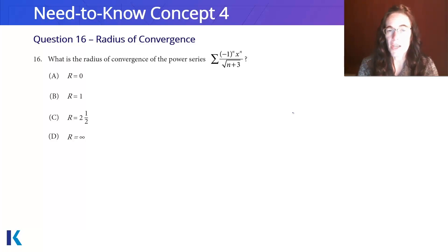What is the radius of convergence of the power series, the sum, negative 1 to the n, x to the n, over the square root of n plus 3? It's telling us to specifically use the ratio test here.